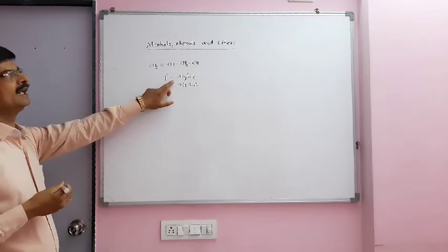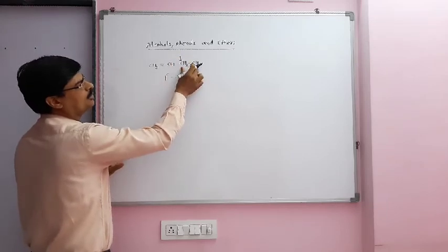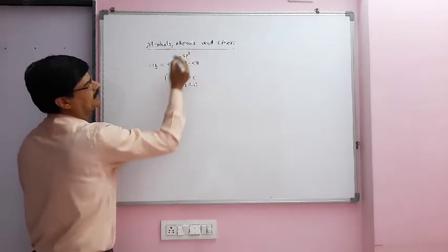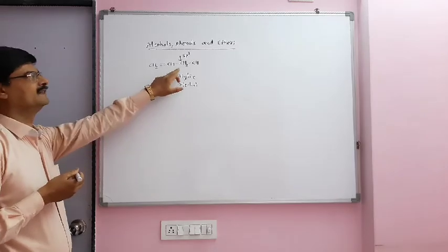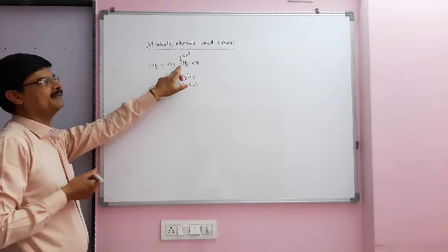Carbon that is attached to OH is of SP3 hybridization. And that is why this is allylic alcohol but with SP3 hybridization.